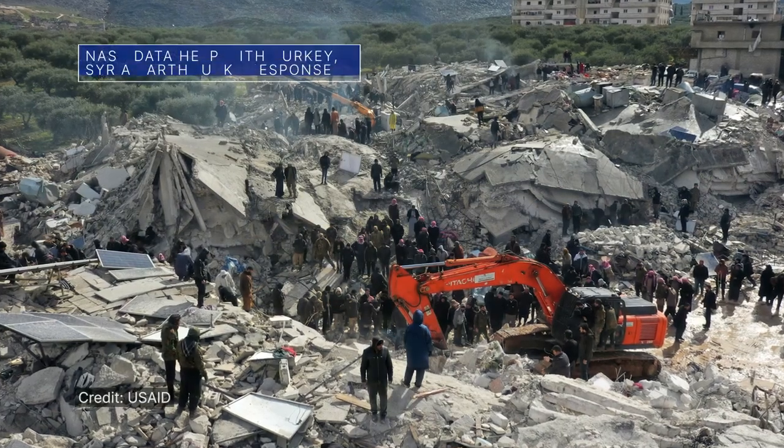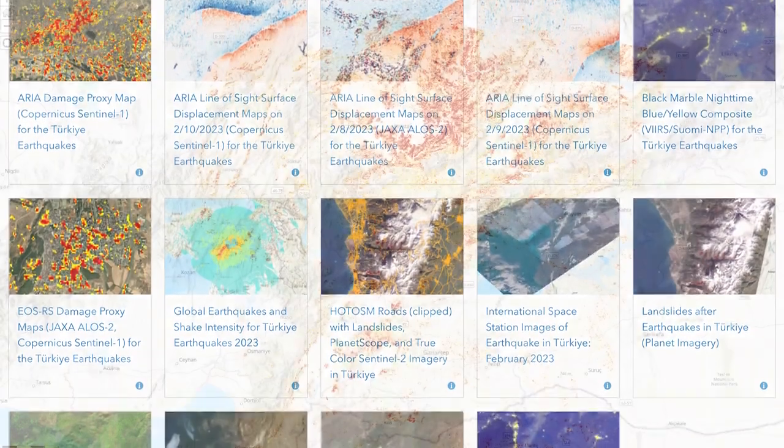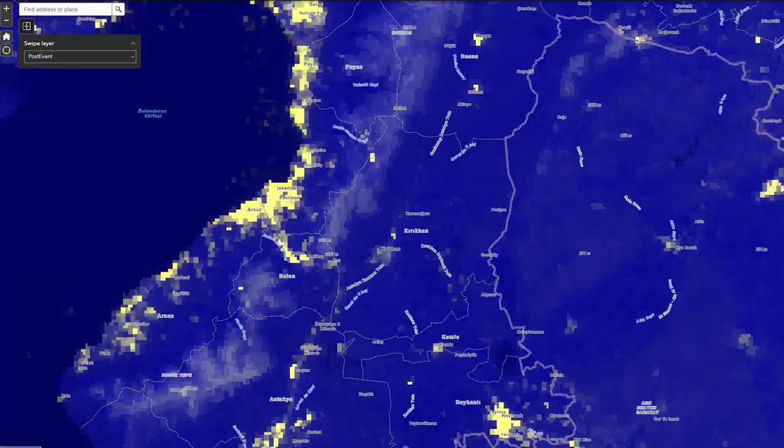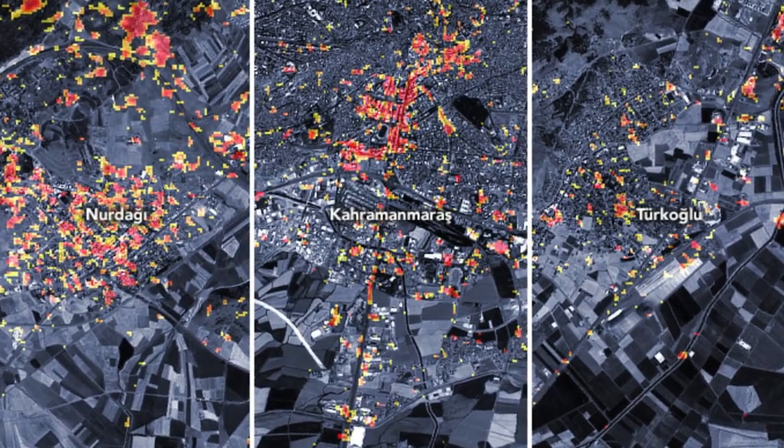Following the devastating earthquakes in southern Turkey and western Syria, NASA's Earth Observatory is working to share aerial views and data from space to help relief and recovery efforts in that region.